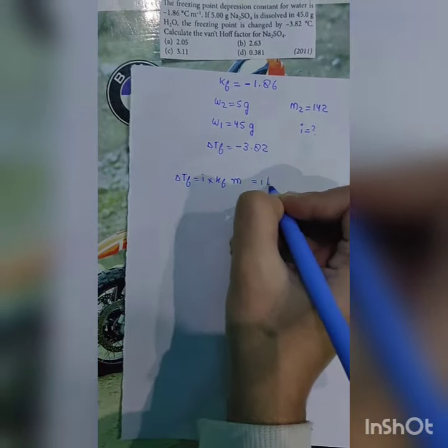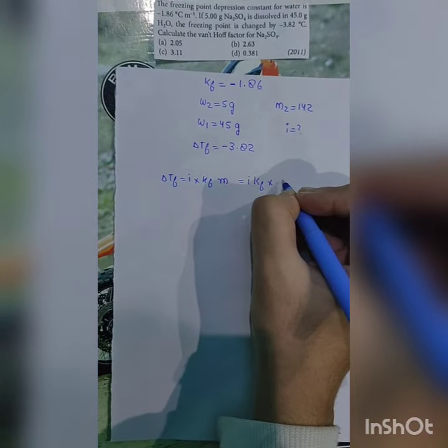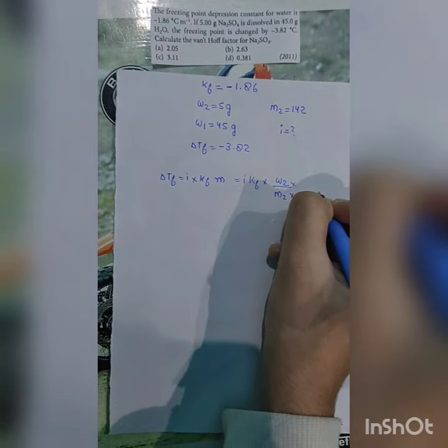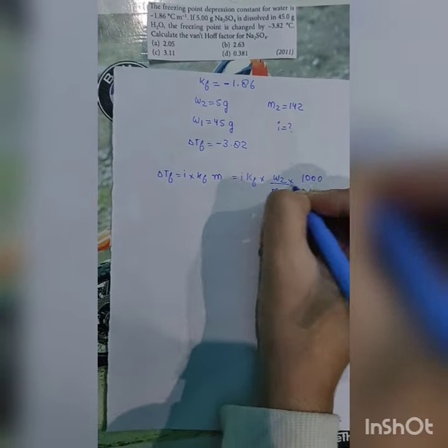Where molality is what? Molality is mass of moles of solute - the moles of solute are mass of solute upon molar mass of solute - upon mass of solvent. Mass of solvent is W1. Since it is given in grams, we have to divide this by 1000.